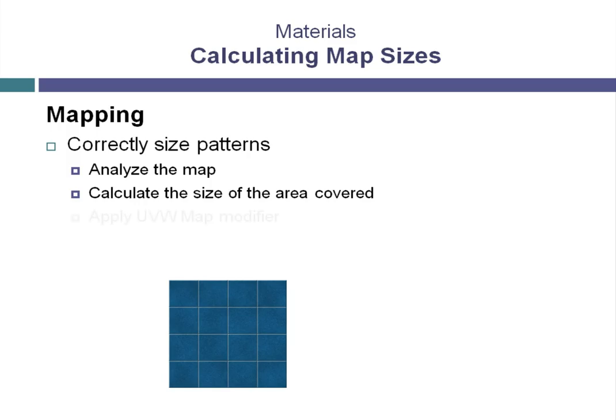Then, you need to apply a UVW map modifier to your object. This essentially works as a projector to project this pattern onto the surface of the object. Finally, you enter the size from the step where you calculated the size of the area to be covered. This value gets input into the UVW modifier and is used to size the pattern appropriately. It's a very simple process. Once you do it a couple of times, it just becomes second nature.